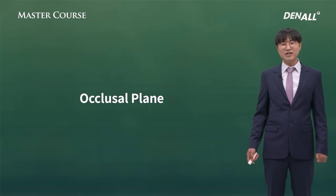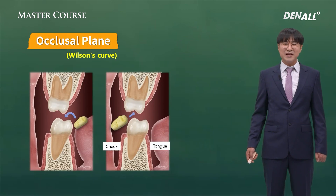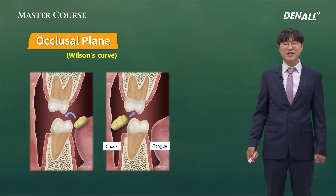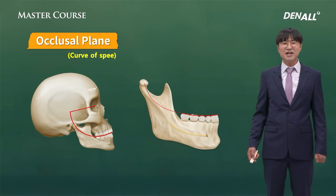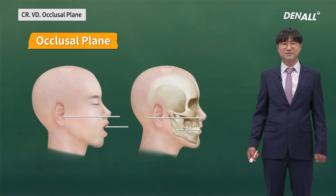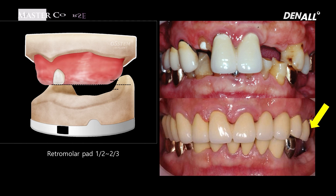Next, occlusal plane. We learned this in dental school. The direction of masticatory muscle movements is to facilitate putting food on the occlusal table. Wilson's curve needs to be provided. The Camper's plane is very important for aesthetics. Occlusal plane was not properly considered in this case — further reduction of the occlusal plane at teeth 24 and 25 should have been made.